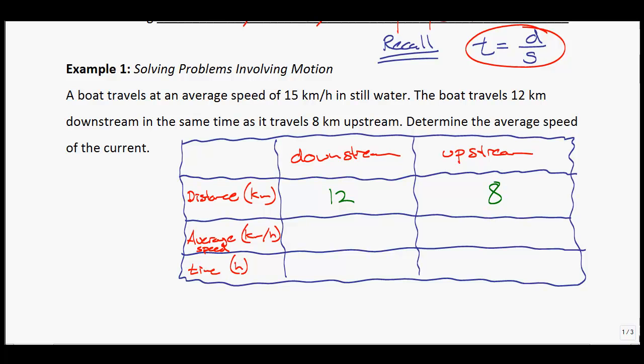In terms of speed, let X equal the speed of the current. If the boat normally goes at 15 km/h, we should add X to the speed for downstream, so I'm going to write this as 15 plus X. For upstream, we're going against that current, so 15 minus X.